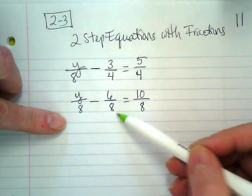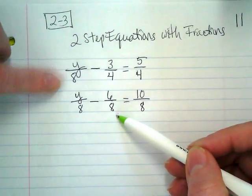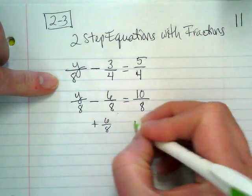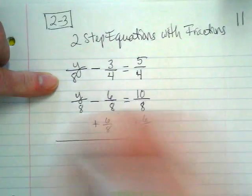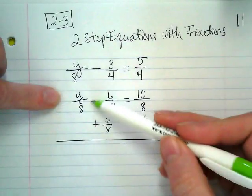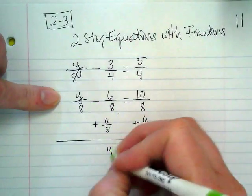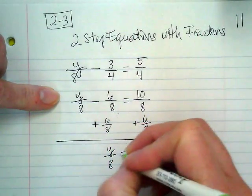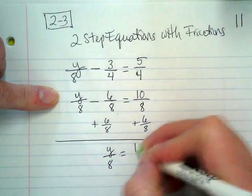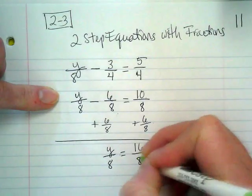I'm going to work with the fraction that doesn't have the variable in it first. Plus 6 over 8. That's going to zero it out on the left, leaving me with the fraction with the variable. And 10 over 8 plus 6 over 8 gives us 16 over 8.